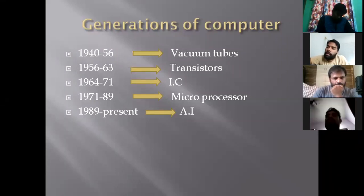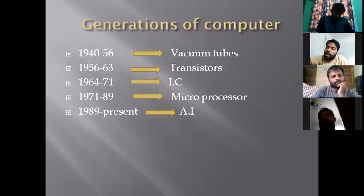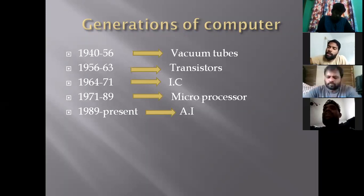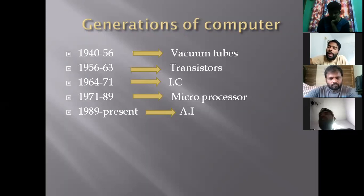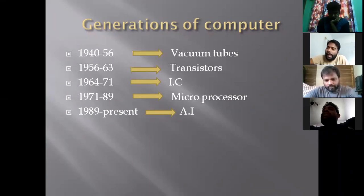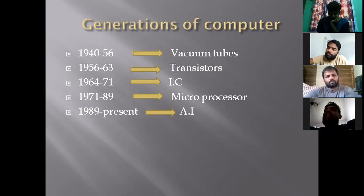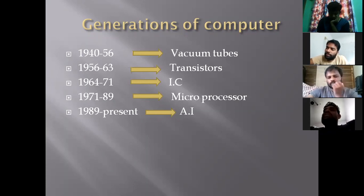In the first generation of computers, vacuum tubes were used as electronic components to control the flow of data. Thousands of vacuum tubes were used in these computers, resulting in very high power consumption. The main drawback was excessive heat and noise.